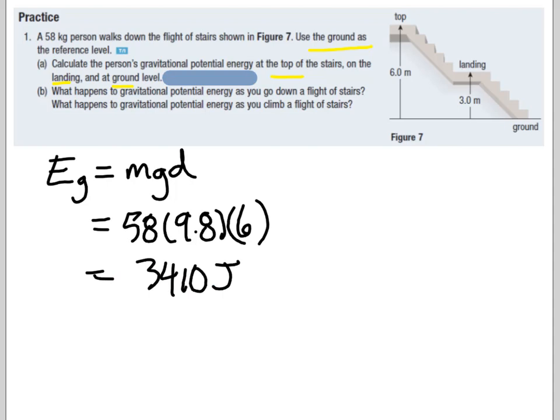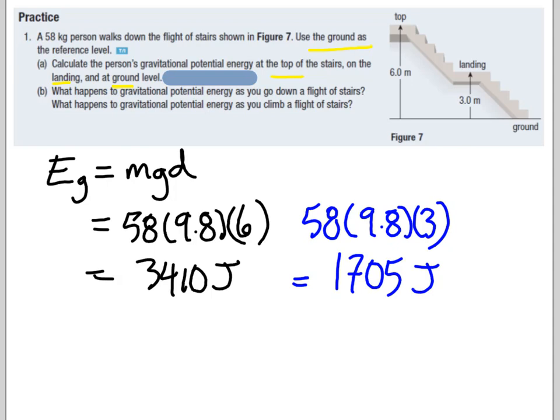If we switch to the landing, then we have the exact same thing, only with 3 meters, so we should have half of that, 1,705 joules. And then lastly, when we're on the ground, because we're on the ground, our d equals 0, and we would have 0 joules. So what happens to gravitational potential energy as you go down a flight of stairs? Well, your gravitational potential energy decreases. What happens to gravitational potential energy as you climb a flight of stairs? Your gravitational potential energy increases.